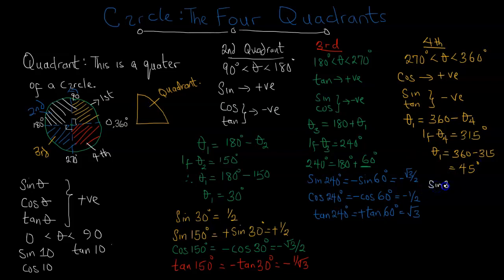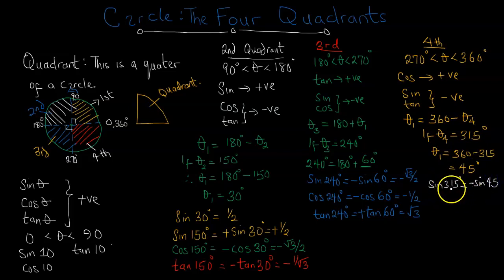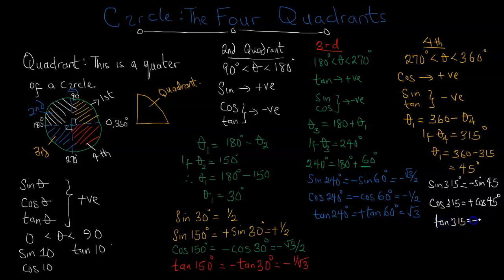Since sine is negative in the fourth quadrant, sine 315° = −sine 45°. Cosine 315° = +cos 45°, since cosine is positive in the fourth quadrant. Tangent 315° = −tan 45°, since tangent is negative there.